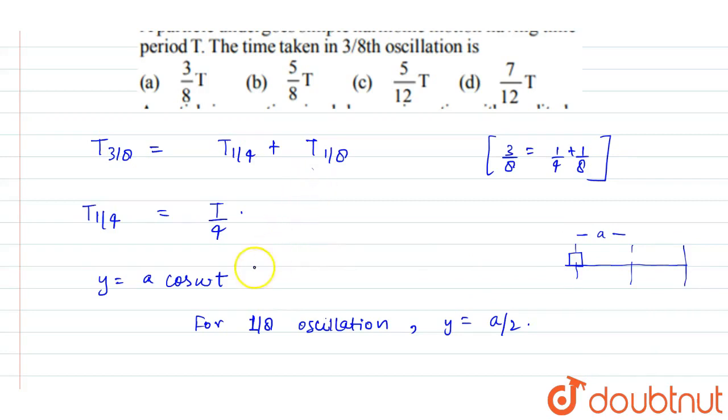For 1/8 oscillation, one oscillation is when the body goes from here to there and comes back. So 1/8 oscillation means when the body reaches somewhere here. So we can say that displacement for 1/8 oscillation will be equal to a/2.